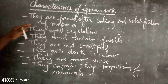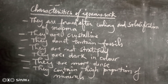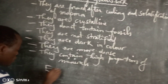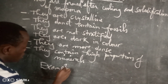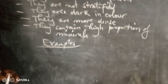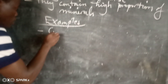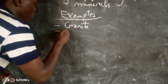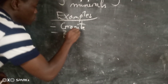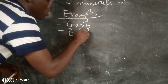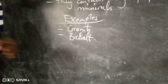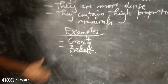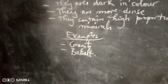We cannot end this topic on igneous rock without telling you the examples. We have some examples of igneous rock: we have granite and we have basalt. Those are examples of igneous rock, and we shall also give you other examples, but these two are the most important.